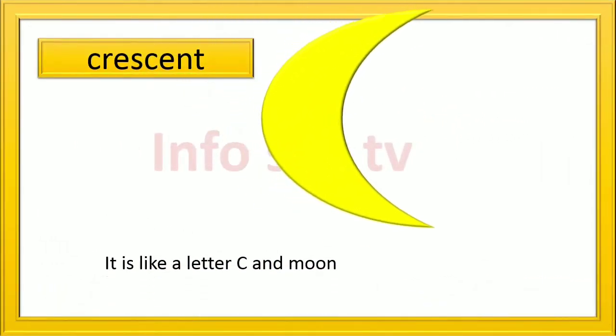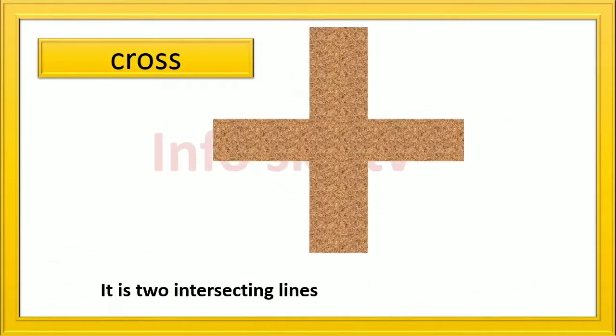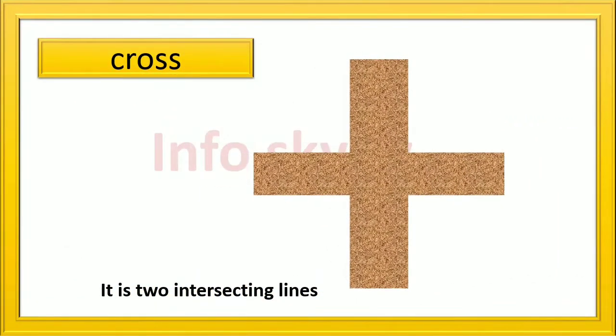Crescent: it is like a letter C and moon. Cross: it is two intersecting lines.